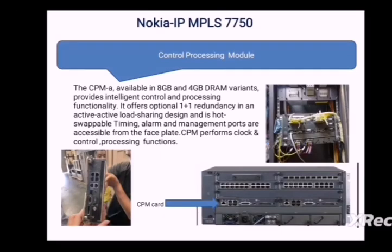Next is the Control Processing Module (CPM) card, which also provides 1+1 redundancy protection — the same main and standby procedure. If one card fails, you can immediately shift the load to the second card. The CPM card also provides login function, clock, and control functions, which are used when you need to troubleshoot your Nokia IPM PLS router.